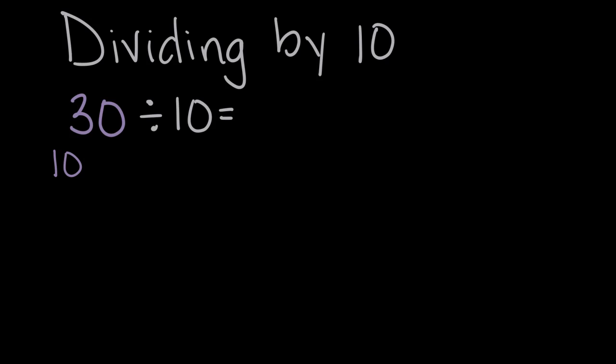One group of 10 is 10, so that's not enough. Plus a second group is 20. Plus a third group is 30. So 30 can be thought of as 10 plus 10 plus 10, or three groups of 10. So if we divide 30 by 10, divide 30 into groups of 10, we end up with three groups.